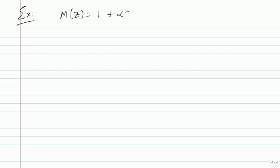Now we take a concrete example: M(z) = 1 + αz⁻¹, with α between 0 and 1 (real). M(z) is monic, causal, and minimum phase since |α| < 1. We'll compute equalizer structures and figures of merit for all three: MLSD, zero-forcing linear equalizer, and ZF-DFE, then compare them.